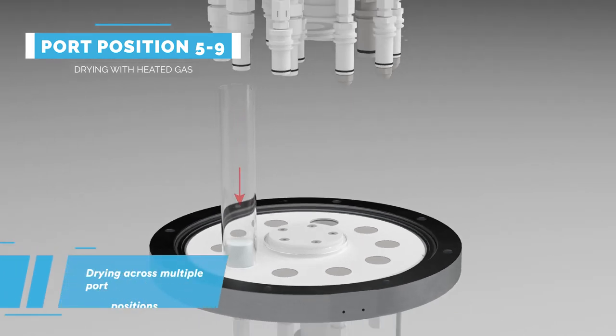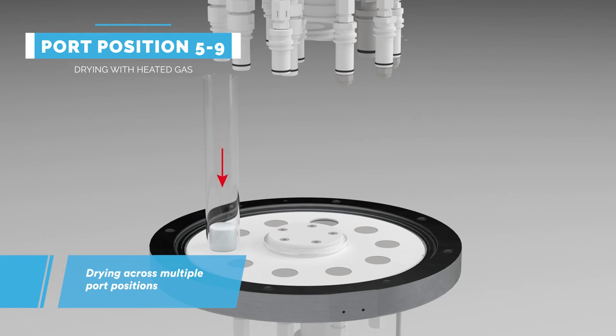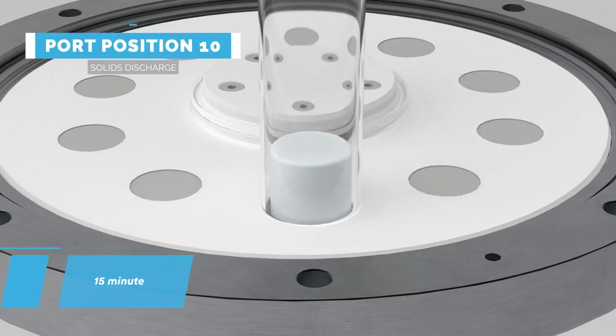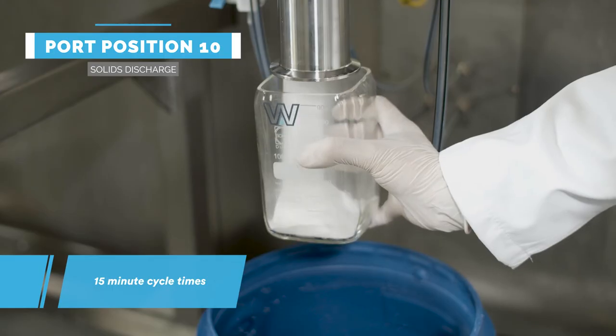Drying is achieved by drawing heated nitrogen or air through the cake via AWL's heated transfer lines. The cycle time for filtration, washing, and drying is typically 15 minutes.